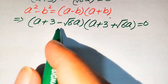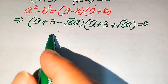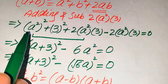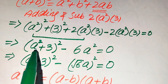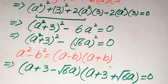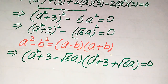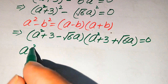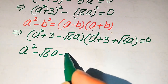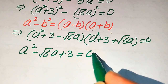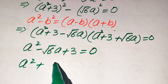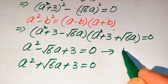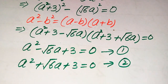We have a small correction here: the terms are (a²+3), so we get (a²+3) in both factors. We divide into two cases: Case 1 is a² − √6·a + 3 = 0 (equation 1), and Case 2 is a² + √6·a + 3 = 0 (equation 2).